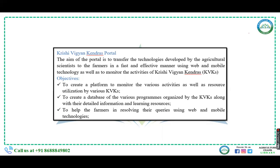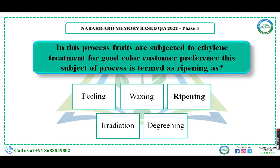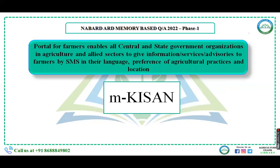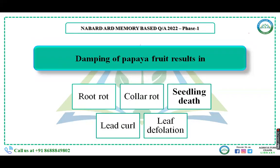In the process where fruits are subjected to ethylene treatment for good color and customer preferences, this process is termed as ripening. The organ responsible for cell growth and development is the nucleus. The M-Kisan portal enables all central and state government organizations in agriculture and allied sectors to give information services and advisories to farmers by SMS in their language preferences regarding agriculture practices and location.